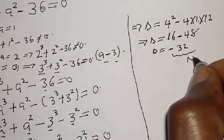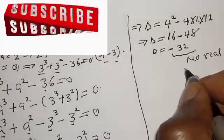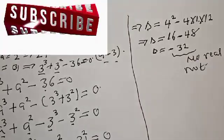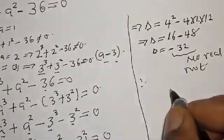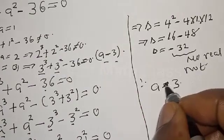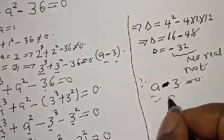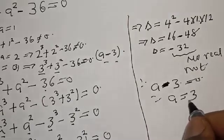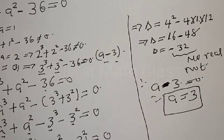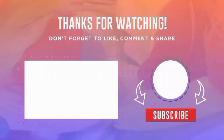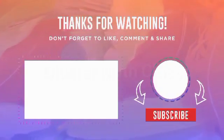Since the discriminant is negative, there is no real root here. Therefore, our only real root is A minus 3 equals 0, and our A equals 3. So that is our final answer. Please don't forget to like, share, comment, and subscribe. Thank you.